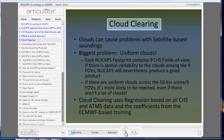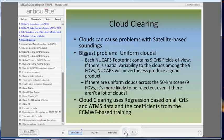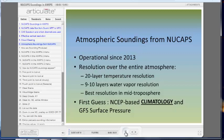Cloud clearing, produced by a regression that uses all of the data, is an important part of the NuCAPs algorithm. From the algorithm perspective, uniform clouds are the biggest problem. Each NuCAPs footprint contains 9 CRIS fields of view. If there is spatial variability to the clouds among those 9 fields of view, NuCAPs will nevertheless produce a good product. If there are uniform clouds across that 50-kilometer scene with 9 fields of view, then it's more likely to be rejected, even if there aren't a lot of clouds.